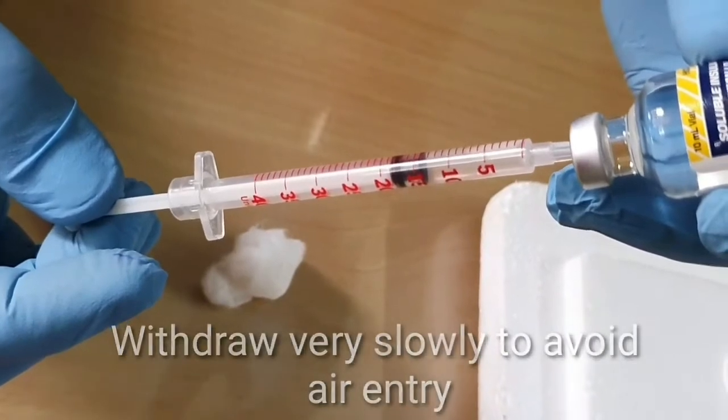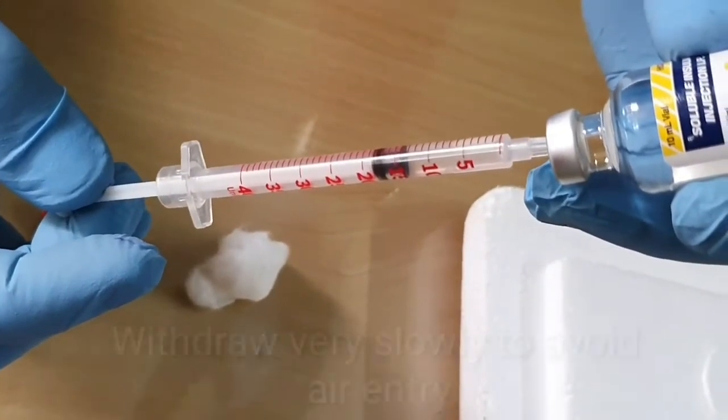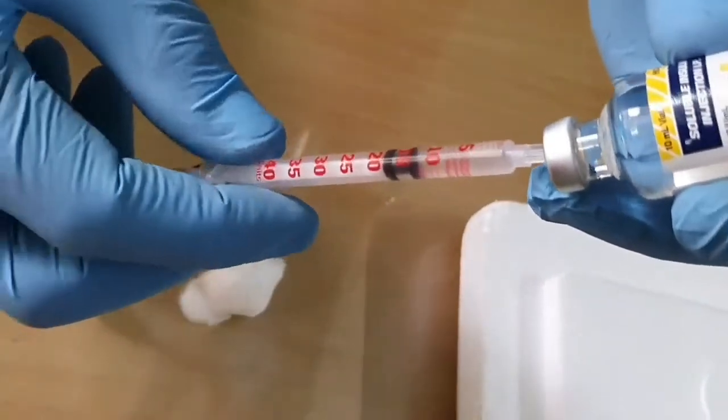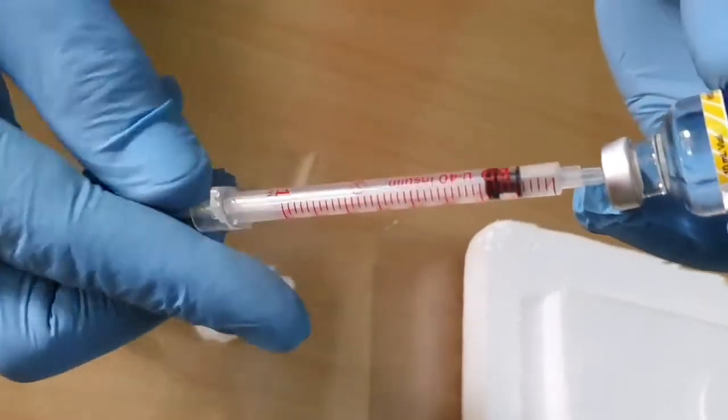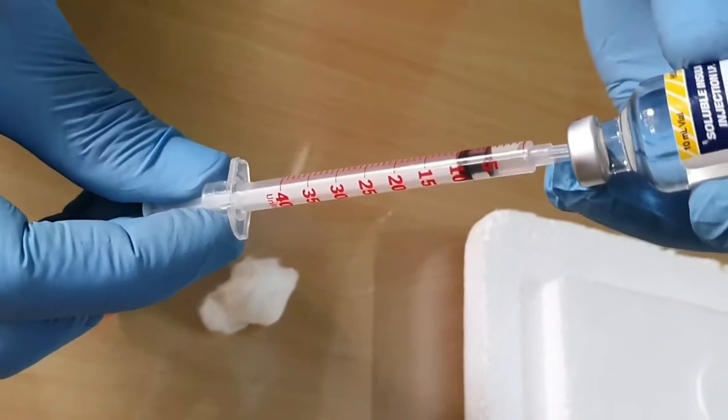So now I am at the 14 mark. Suppose at times if you withdraw faster there can be air. Now you don't bother. What you can do is push back the entire insulin back into the bottle and then slowly withdraw so that there is no air.